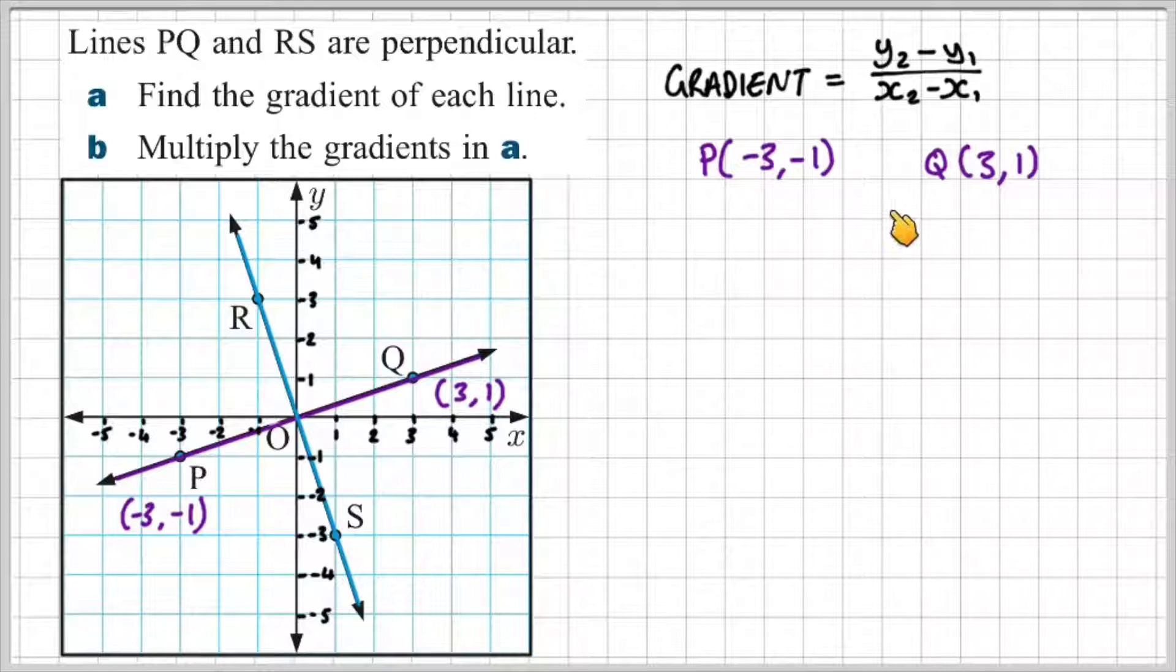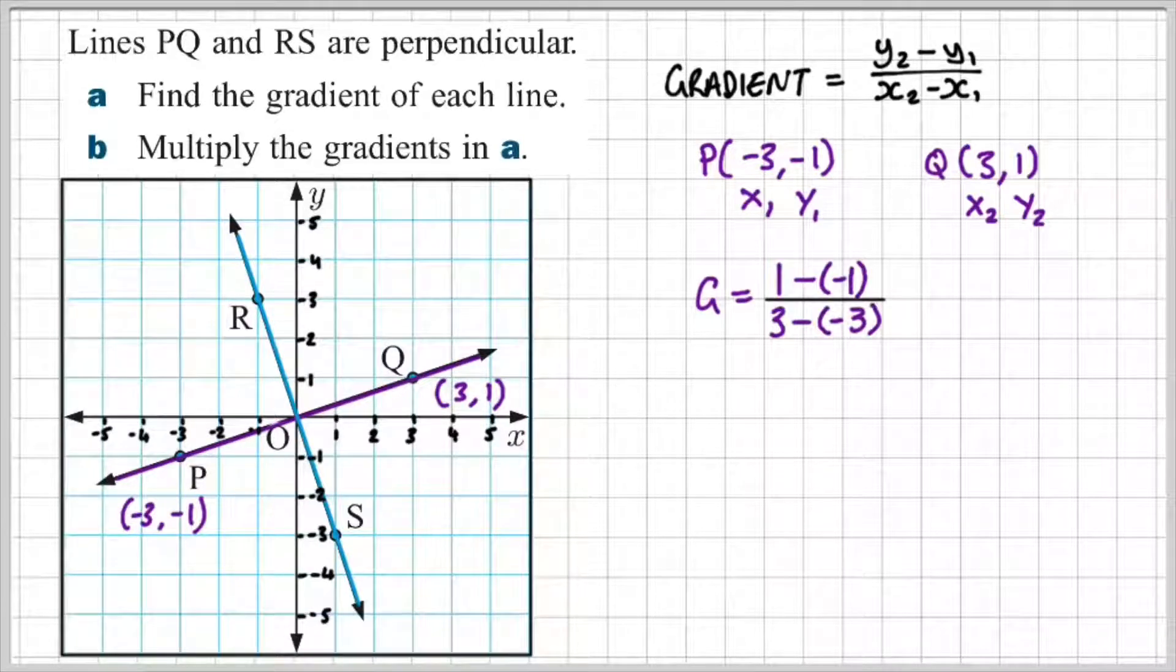So we can use those two points to work out the gradient. If I label those x1, y1, x2 and y2 respectively, I can substitute those values into my formula.